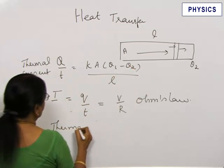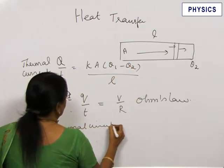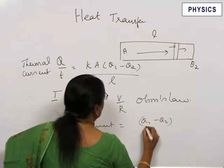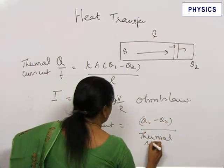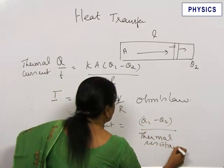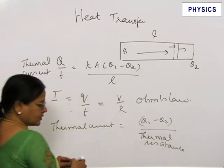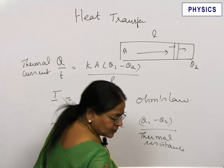Thermal current is equal to theta 1 minus theta 2 by thermal resistance. In the place of electric resistance we have thermal resistance.